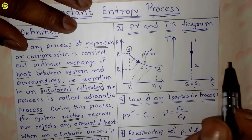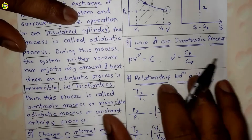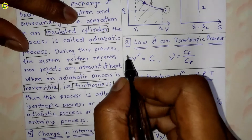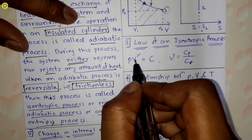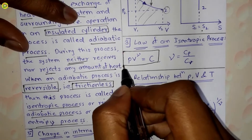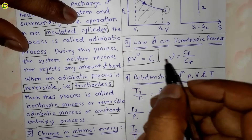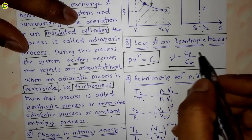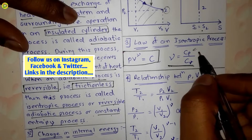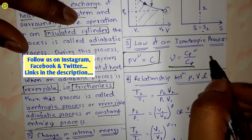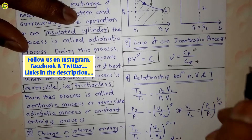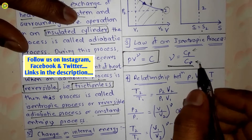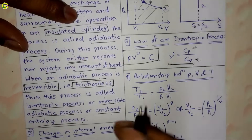Now, the law of an isentropic process states that PV raised to gamma is equal to constant. Here gamma is equal to Cp upon Cv, where Cp is the specific heat at constant pressure and Cv is the specific heat at constant volume.